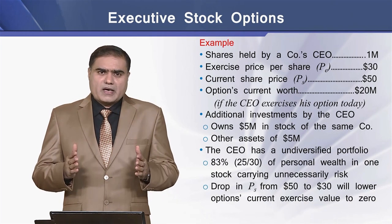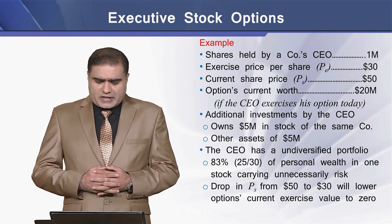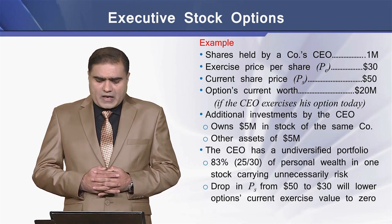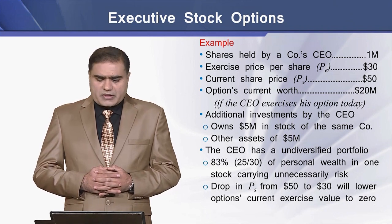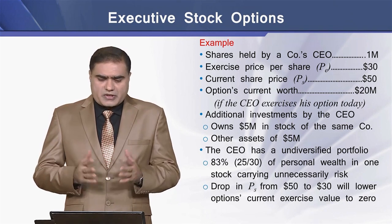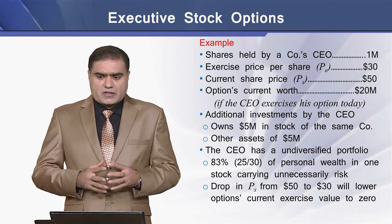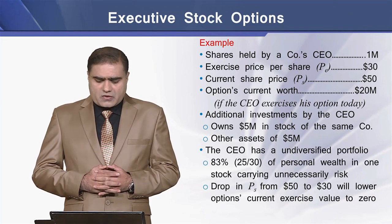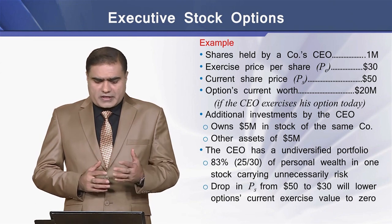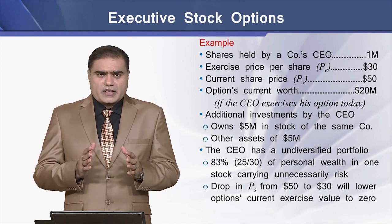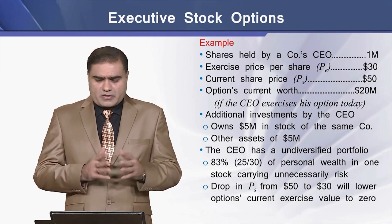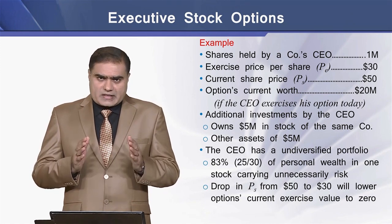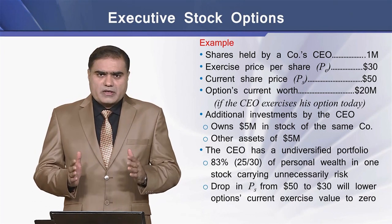Now let's see another example where the shares held by a company's CEO are 1 million shares. The exercise price of these shares is $30 per share, whereas the current share price is $50 per share. If the firm's CEO exercises his option right now, his current net worth of these options will be equal to $20 million.